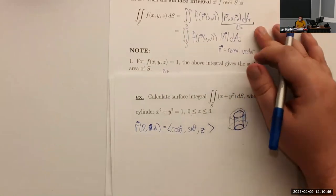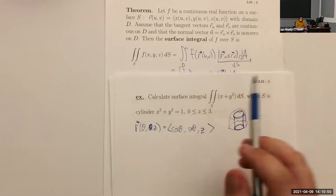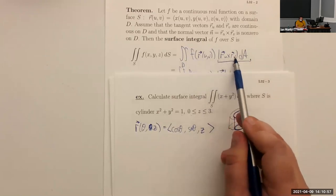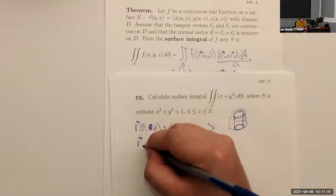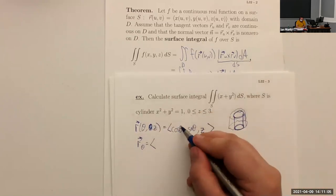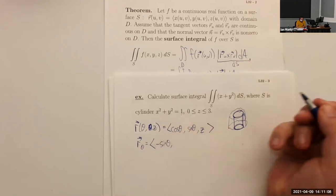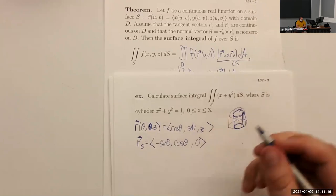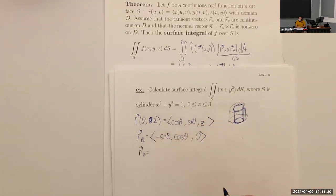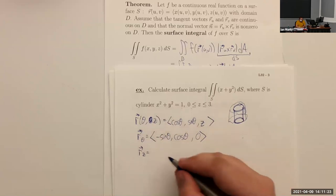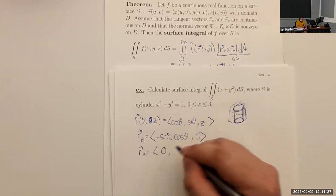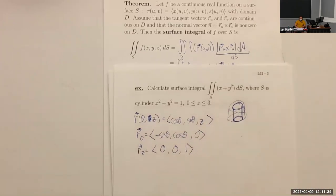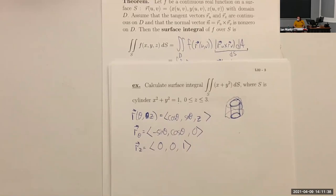To do the surface integral we need |R_u cross R_v|. Let's compute R_theta: the derivative of cos θ is -sin θ, the derivative of sin θ is cos θ, and the derivative of z with respect to theta is 0. For R_z: there are no z's in x or y, so those derivatives are 0, 0, and the z-derivative of z is 1.